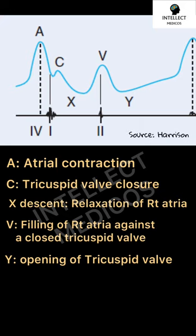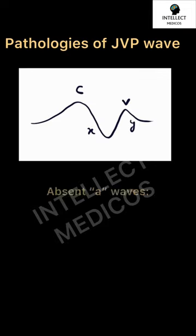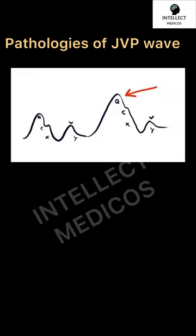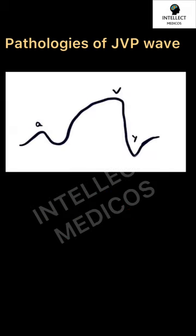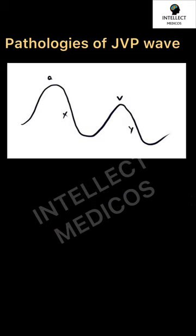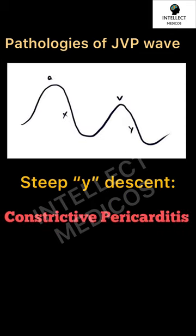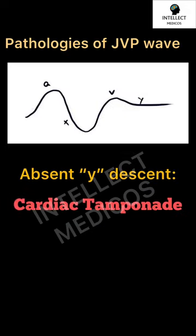Talking about the pathologies: absent 'a' wave as shown is seen in atrial fibrillation; cannon 'a' waves in complete heart block and ventricular arrhythmias; large 'v' waves in tricuspid regurgitation; rapid and steep 'y' descent in constrictive pericarditis; and absent 'y' waves in cardiac tamponade.